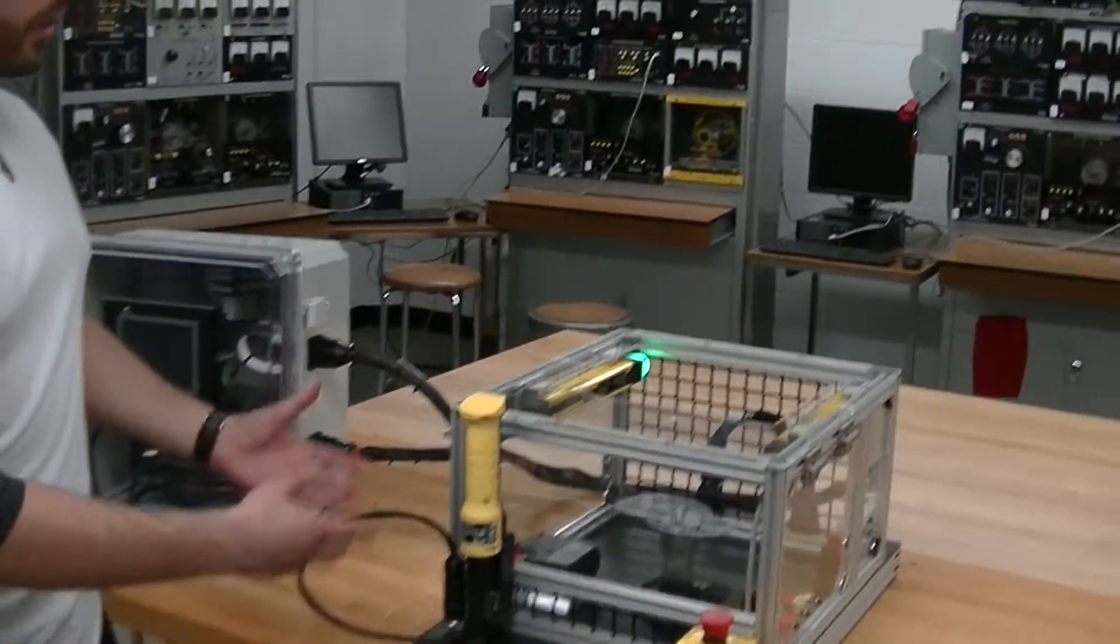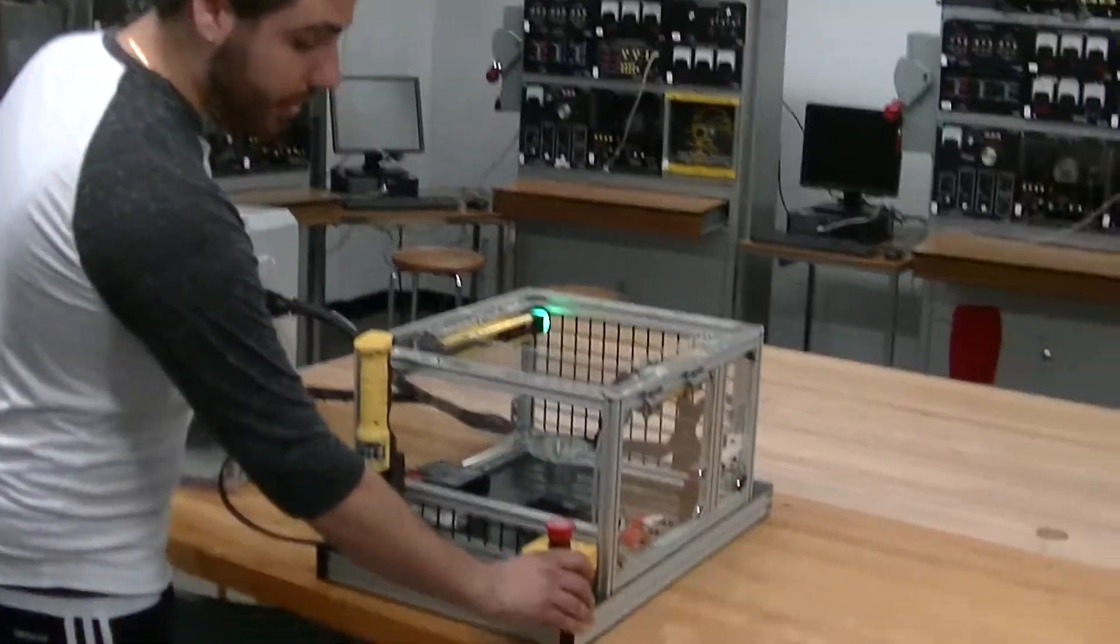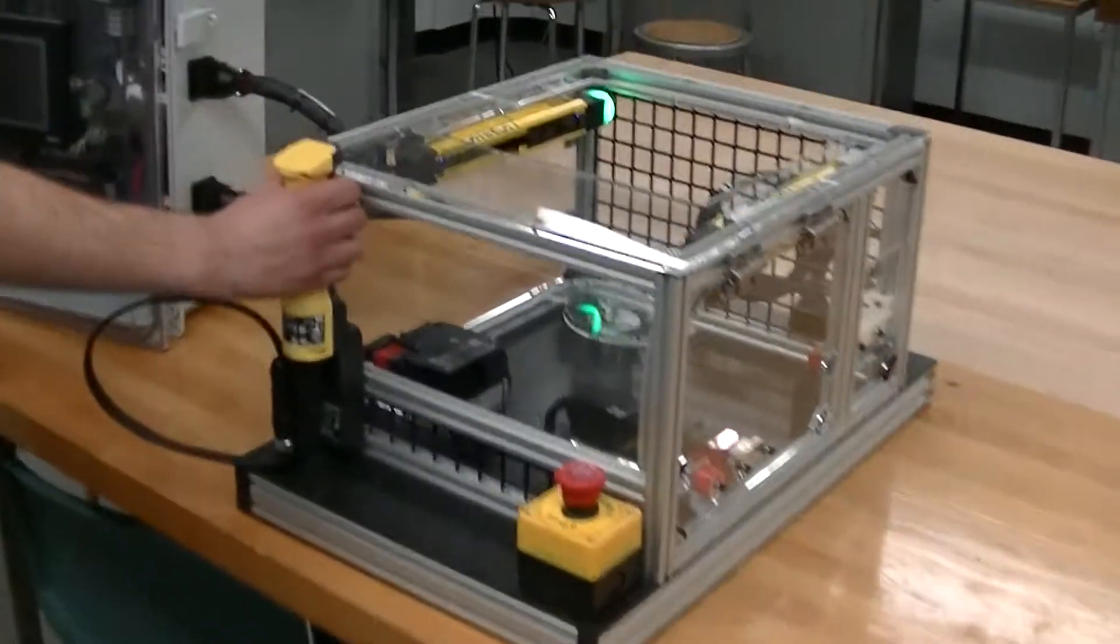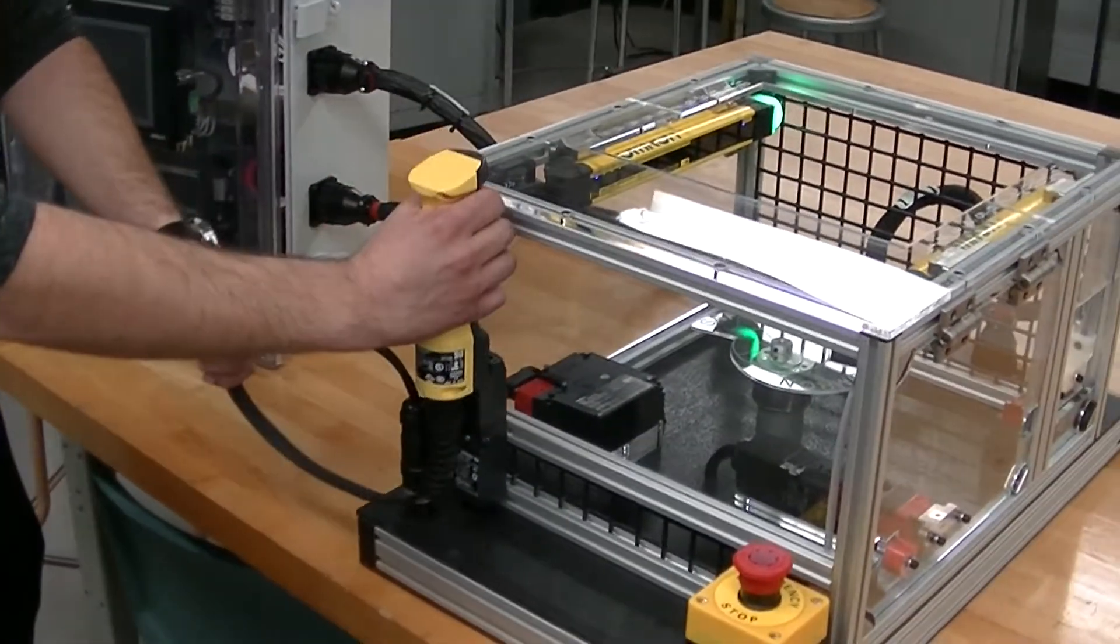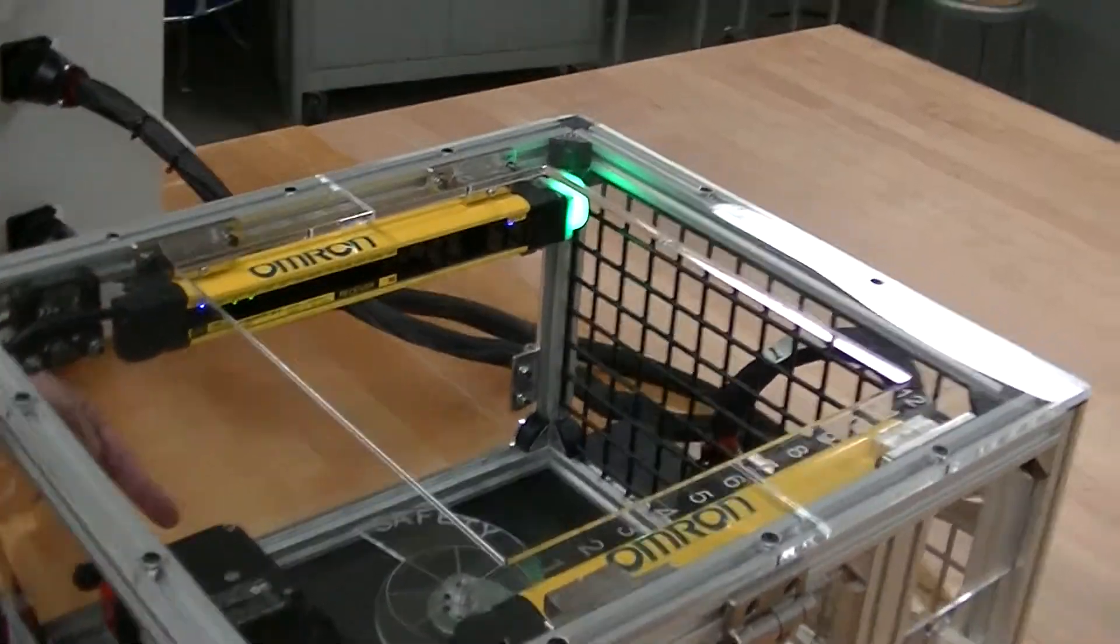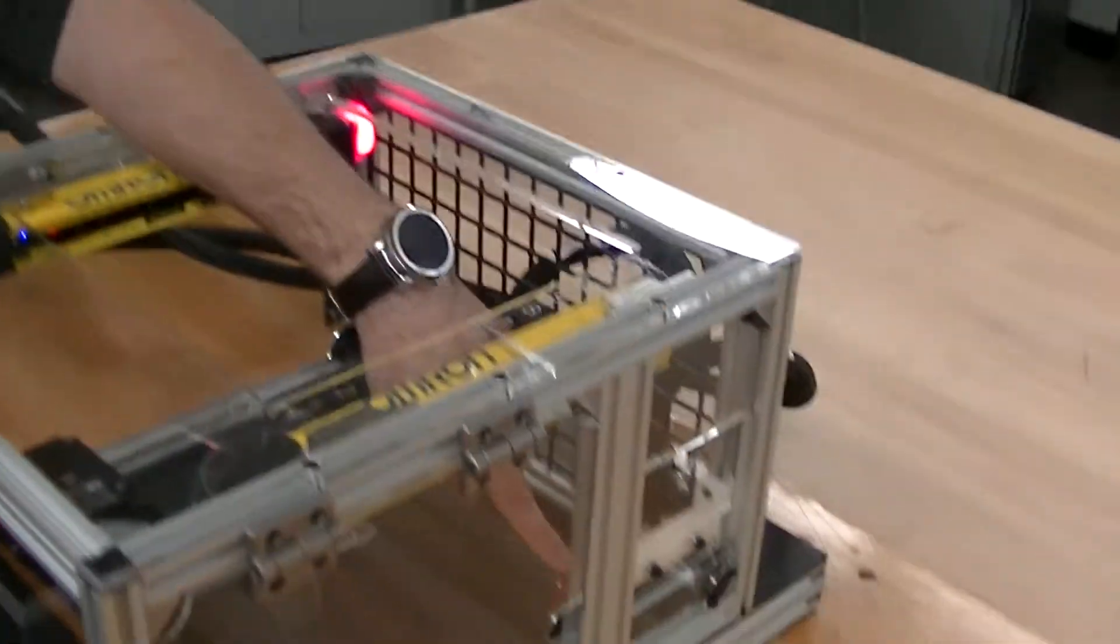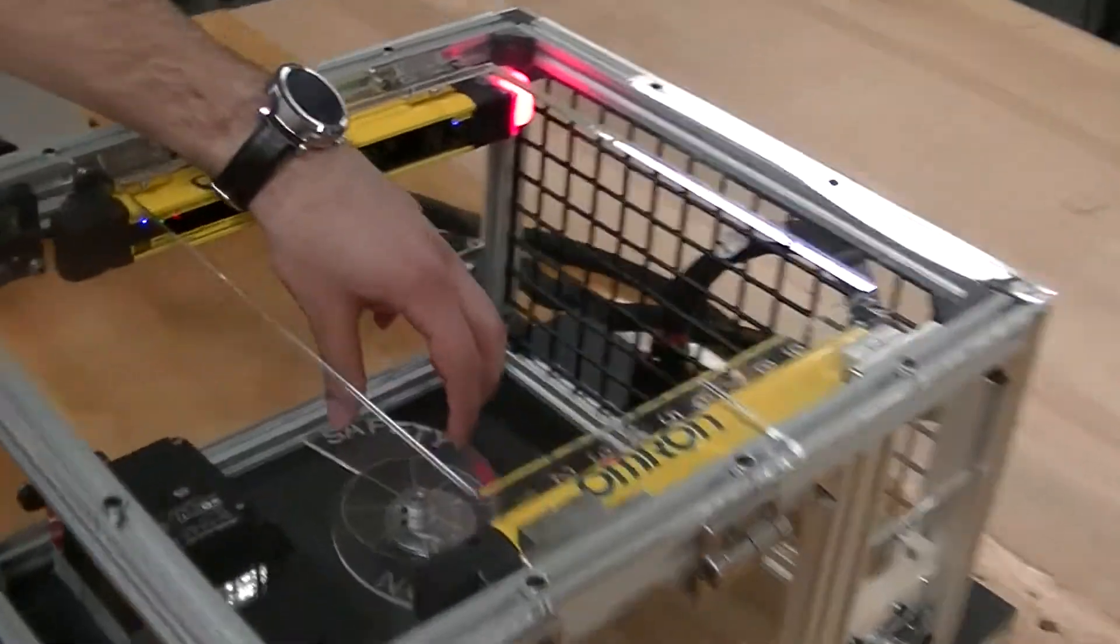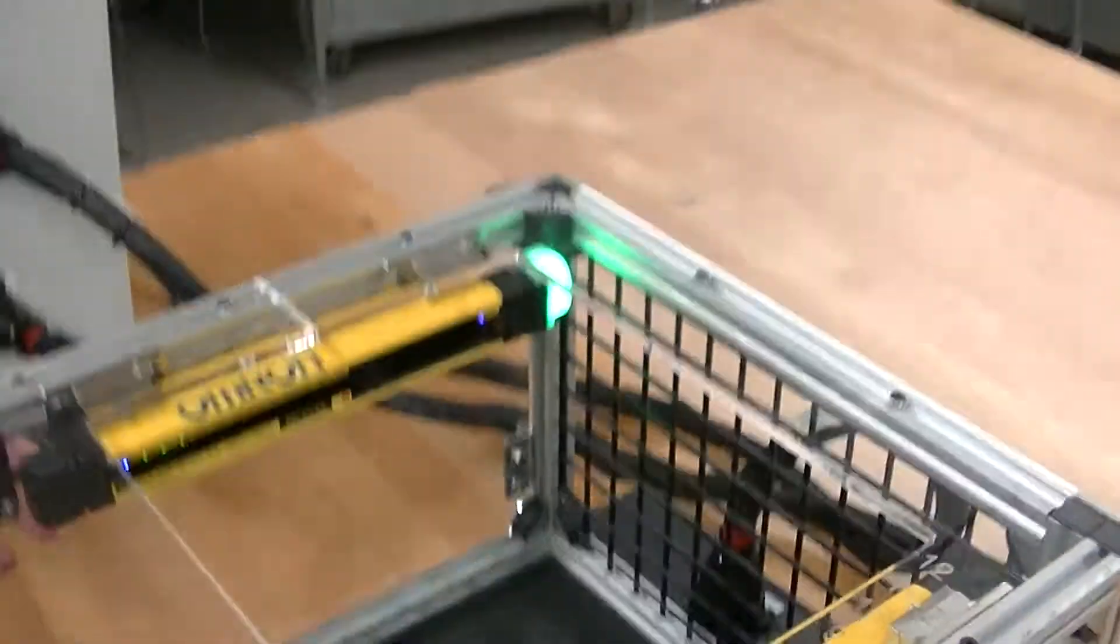The wiring gets distributed to all these different components. Some of the components we are using are an e-stop, an enabling grip switch, a door interlock switch, F3SG light curtains, two locking door switches, a non-contact switch, and a hinge switch over here.